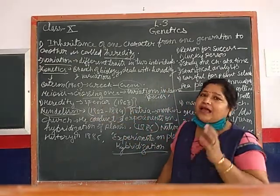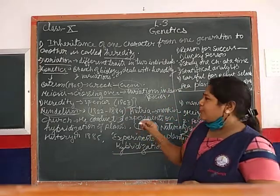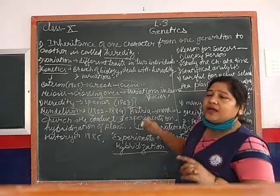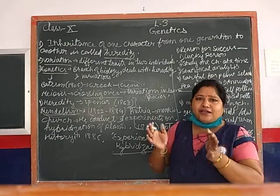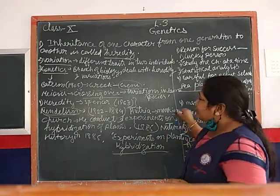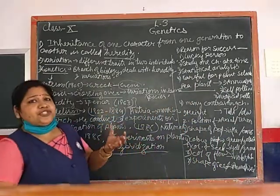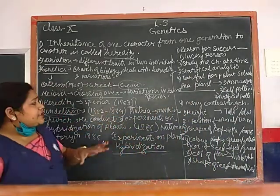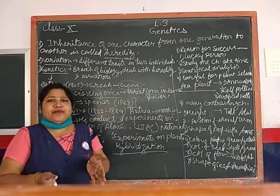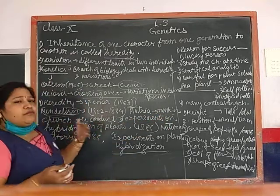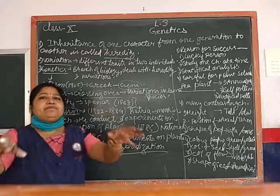Gregor Johann Mendel's birth was in Austria. After that, he had graduated - he studied psychology and philosophy from 1842 to 1884. After that, he joined a church and became a monk. His room was in the tree garden of the church - he was a naturalist.